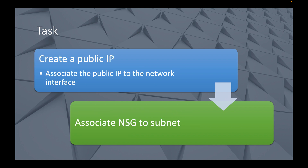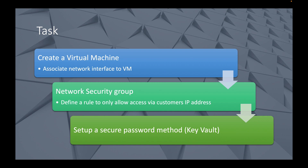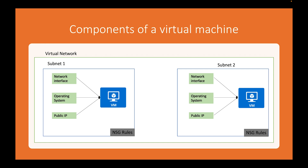In the next part of this series — this is going to be three videos — we're going to create a public IP address, associate the public IP address with our network interface, and then associate our network security group with a subnet. After that, in the final video, we'll create a virtual machine, associate the network interface to the VM, set the network security group's final rule to only allow access via the customer's IP address, and set up a secure password method using a key vault.